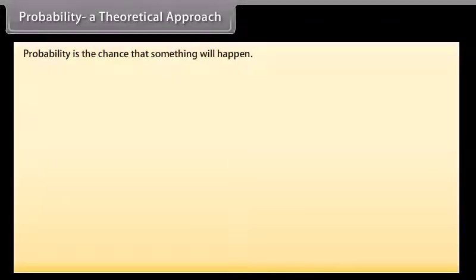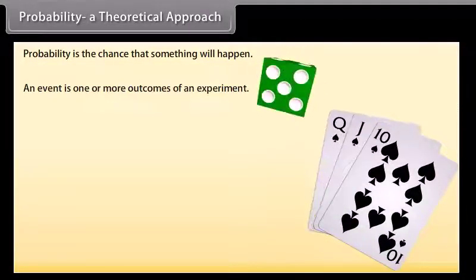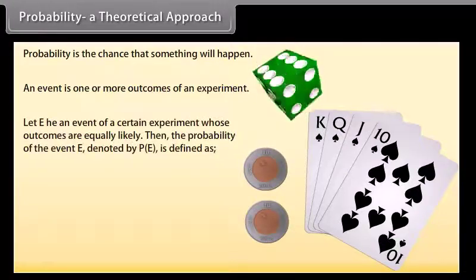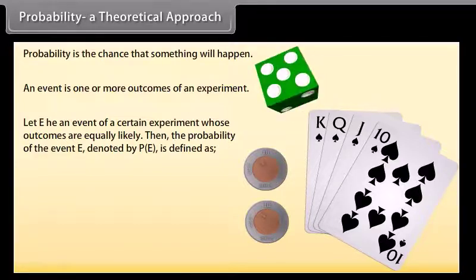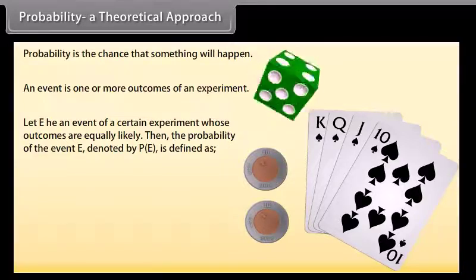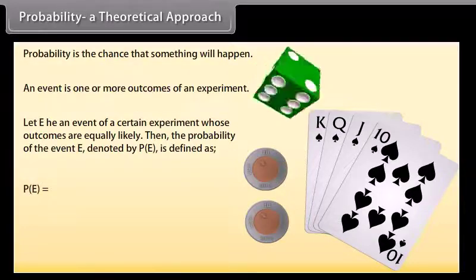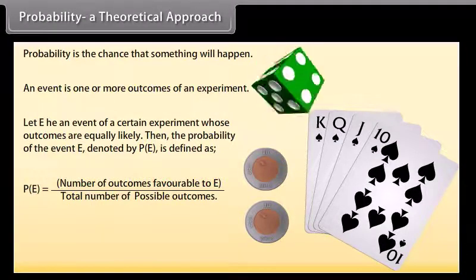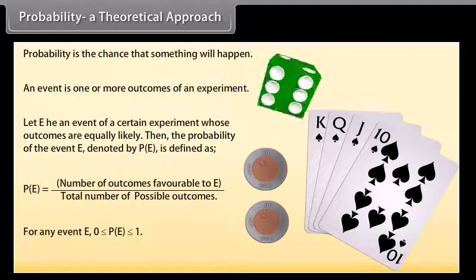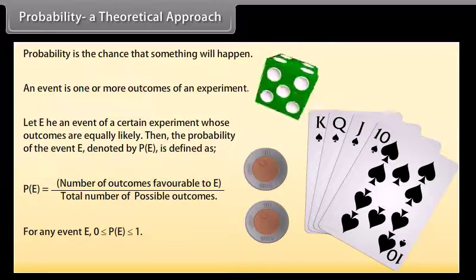Probability — a theoretical approach. Probability is the chance that something will happen. An event is one or more outcomes of an experiment. Let E be an event of a certain experiment whose outcomes are equally likely. Then the probability of event E, denoted P(E), is defined as: P(E) = number of outcomes favorable to E divided by total number of possible outcomes. For any event E, 0 ≤ P(E) ≤ 1.